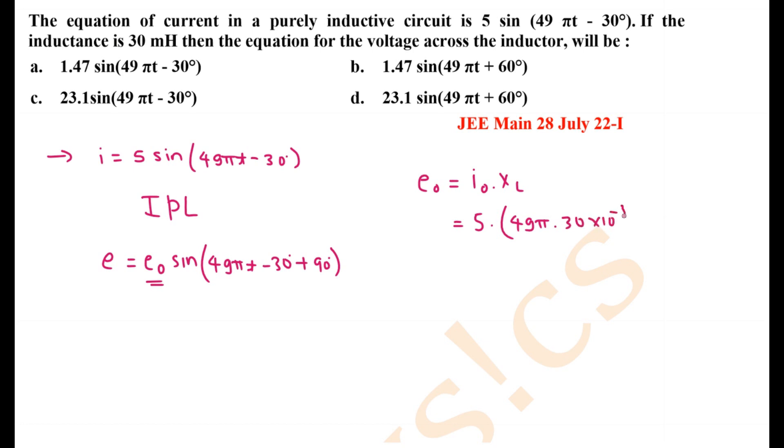30 into 10 to the power minus 3. So if we solve this: 5 into 49 pi, 5 into 49 into 3.14 into 30 is 23079. 23079 into 10 to the power minus 3, which equals 23.01, is the peak voltage.